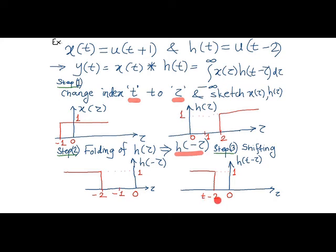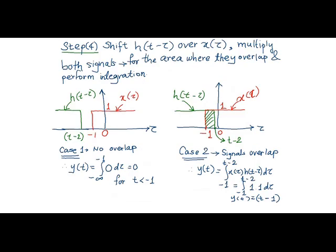In the next step, after folding and shifting, we will start sliding the signal h over x. We will perform this operation until both signals overlap. In the first case where x is fixed and h is shown, there is no overlap between the two signals. Therefore, the output of convolution will be equal to 0 and this will happen for t less than minus 1.